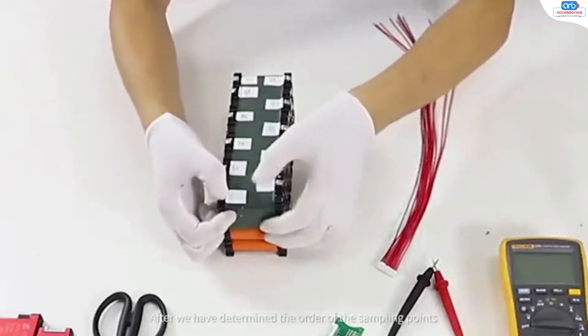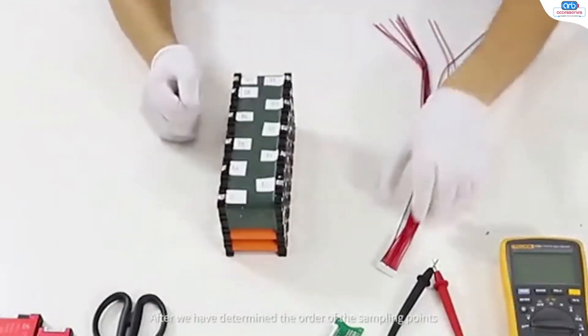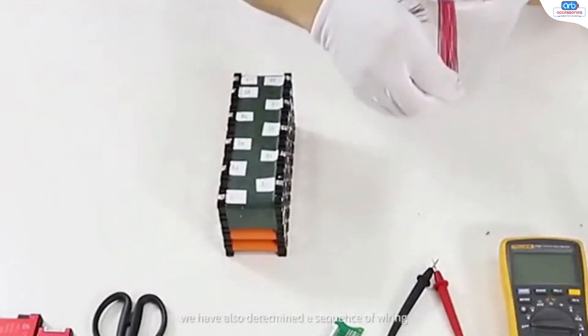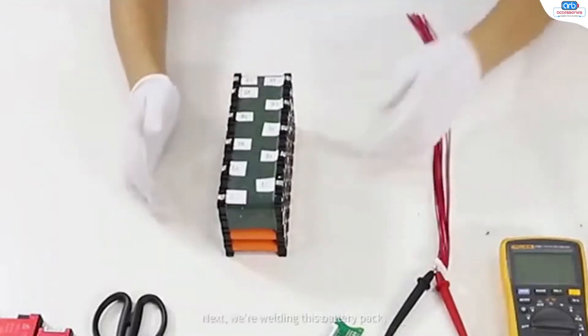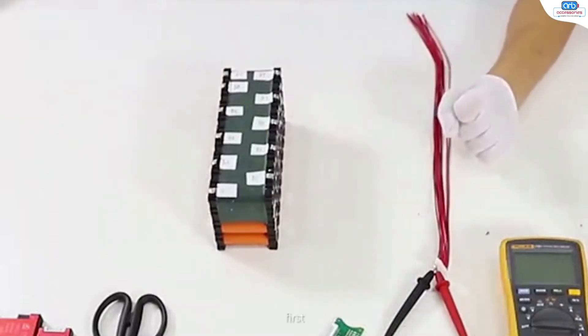After we have determined the order of the sampling points, we have also determined a sequence of wiring. Next, we're welding this battery pack first.